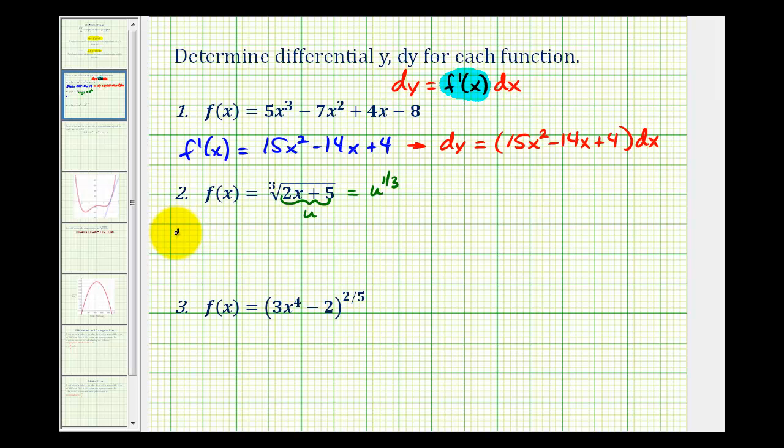So to determine f'(x) of u to the one-third, we'll have one-third times u to the (1/3 - 1). That's negative two-thirds. And u is 2x + 5 times u prime, which would be 2.